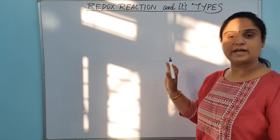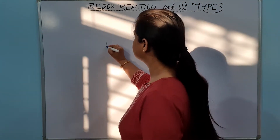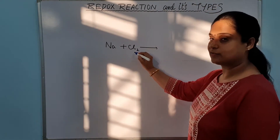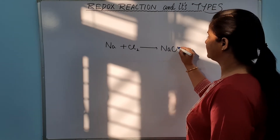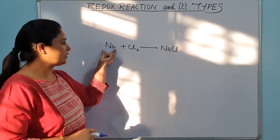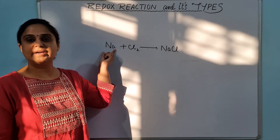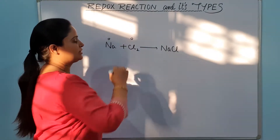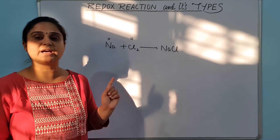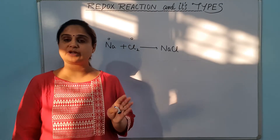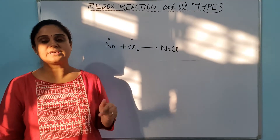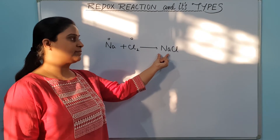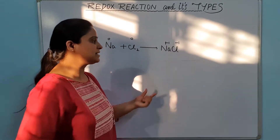Let's see how it is happening and how we are going to recognize redox reactions. I am writing down one reaction: Na + Cl₂ forming NaCl. As we know sodium is in its elemental state, so its oxidation state is 0. Chlorine is also in its elemental state, so its oxidation state is also 0. In NaCl, sodium is at the +1 oxidation state and chlorine is at the −1 oxidation state.